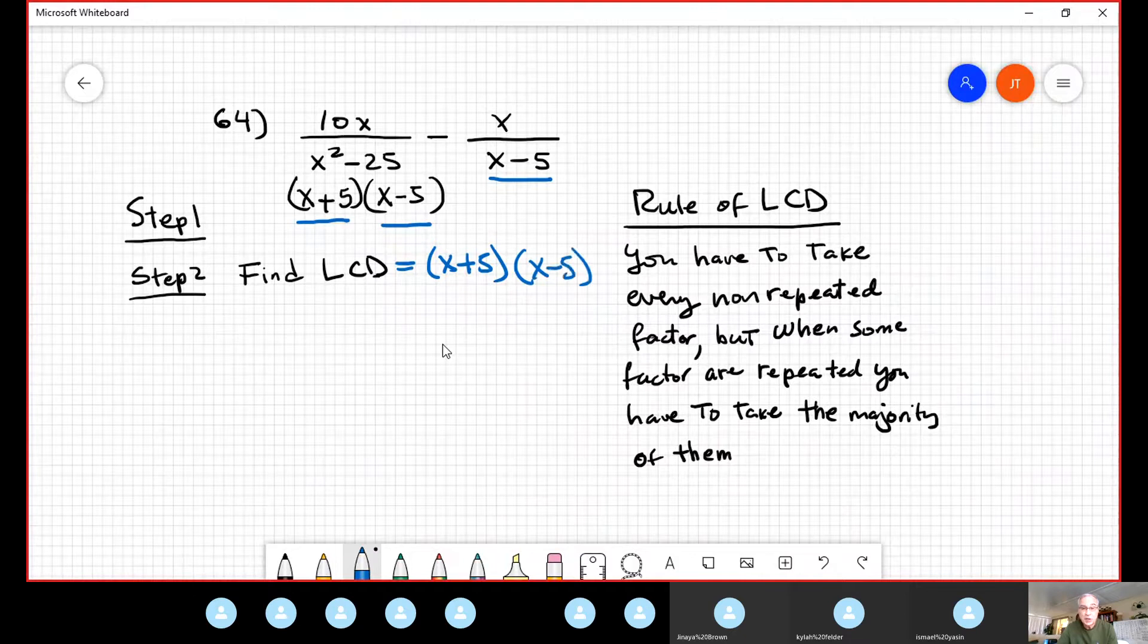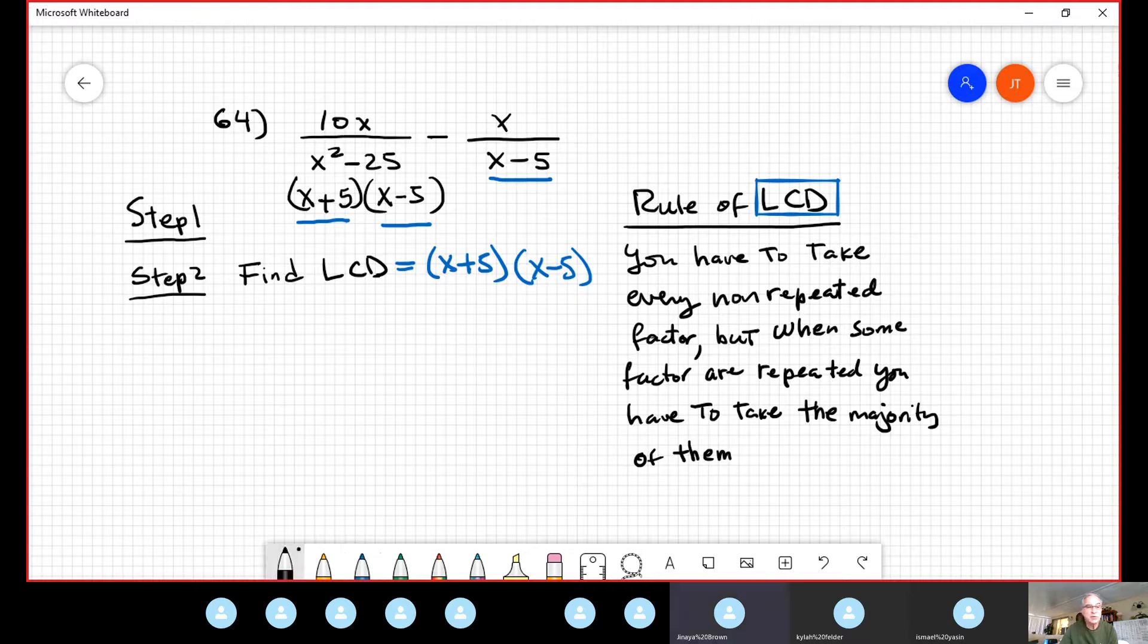Because if you take two, this is not the least common. Least common. You need to cover everything. But when there are repetitions, no. You remove the minority, and you take only the majority. This is my least common denominator. Do you understand this, or no? Everyone follow me? Yes.